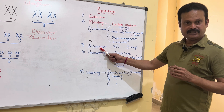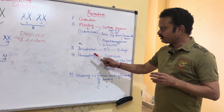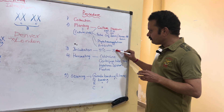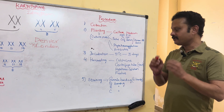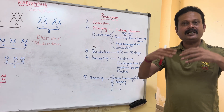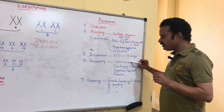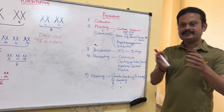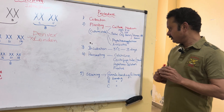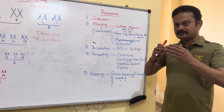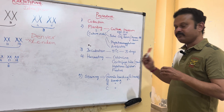Step three is incubation: the contents are incubated at 37 degrees Celsius for 3 days. Step four is harvesting. After approximately 72 hours of incubation, colchicine is added — a drug that arrests the cells at metaphase by preventing the formation of the achromatic spindle. Two hours after adding colchicine, the contents are placed in a centrifuge tube and centrifuged for 5 minutes. The supernatant is then discarded.